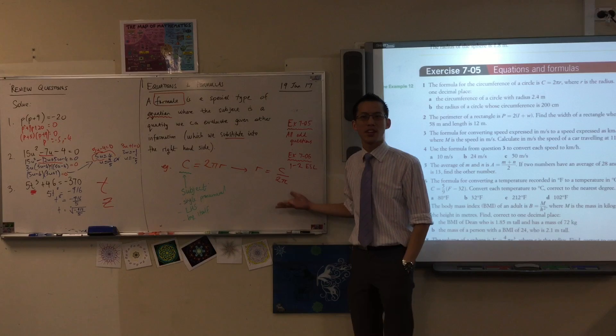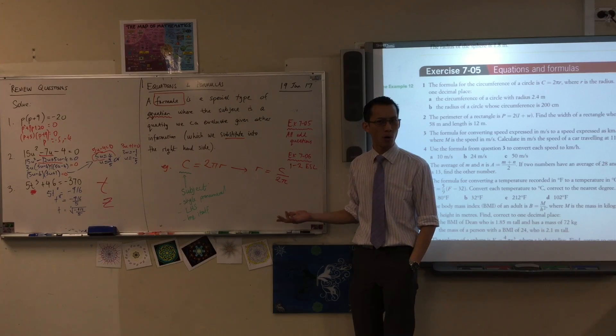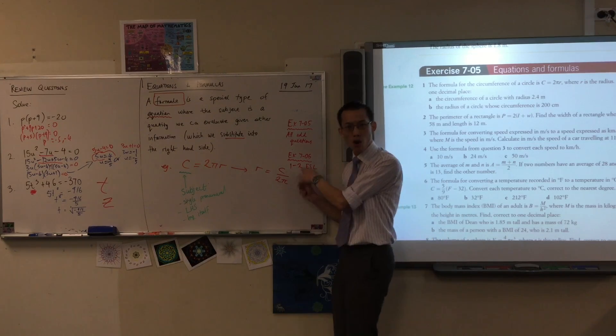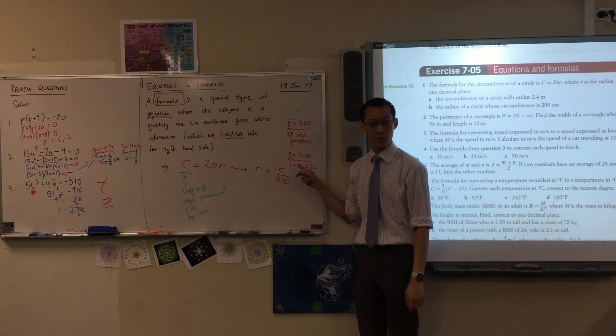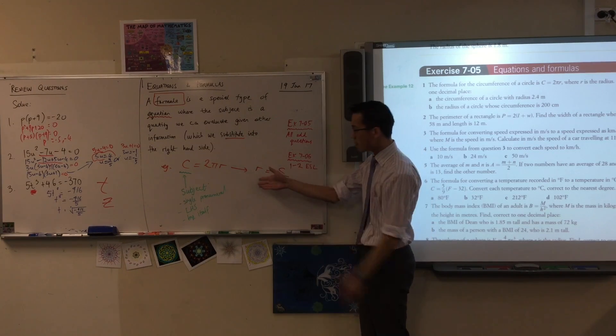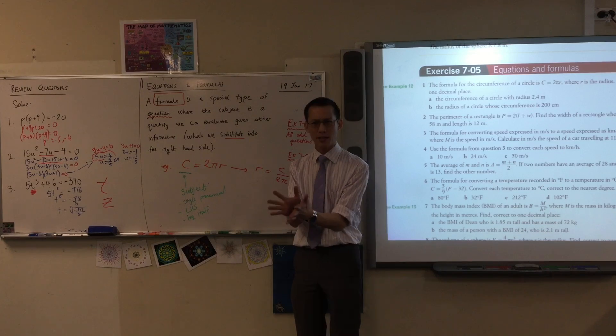It's still an equation and it has a subject, which is a single pronumeral on the left-hand side by itself. But it's not a formula for circumference anymore, is it? It's a formula for radius—if you know what the circumference is.